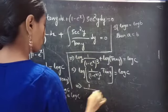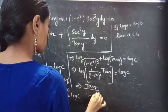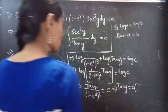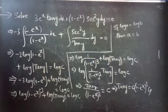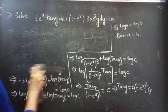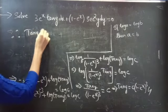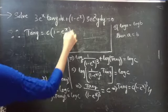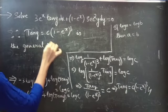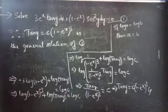Since if log a equals log b then a equals b, we get tan(y) divided by (1 minus e^x)^3 equals c, and therefore tan(y) equals c times (1 minus e^x)^3. This is the general solution of the given differential equation. So this completes the problem.